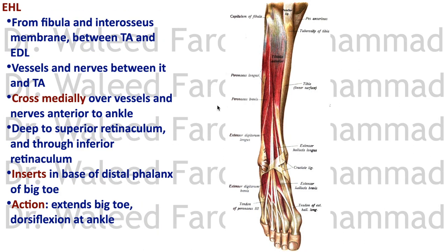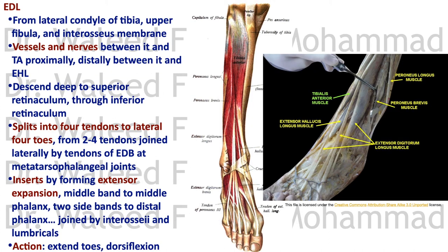Extensor hallucis longus originates from the fibula and interosseous membrane, situated between tibialis anterior and extensor digitorum longus. The vessels and nerve lie between it and tibialis anterior. It crosses medially over the vessels distally, after which the dorsalis pedis artery becomes lateral to it, between it and extensor hallucis brevis. It passes deep to the superior retinaculum and through the inferior retinaculum, inserting into the base of the distal phalanx of the big toe. Its action is extension of the big toe and dorsiflexion at the ankle.